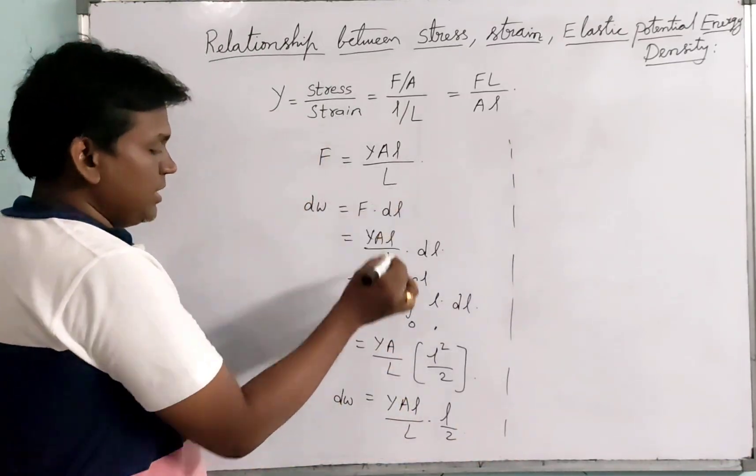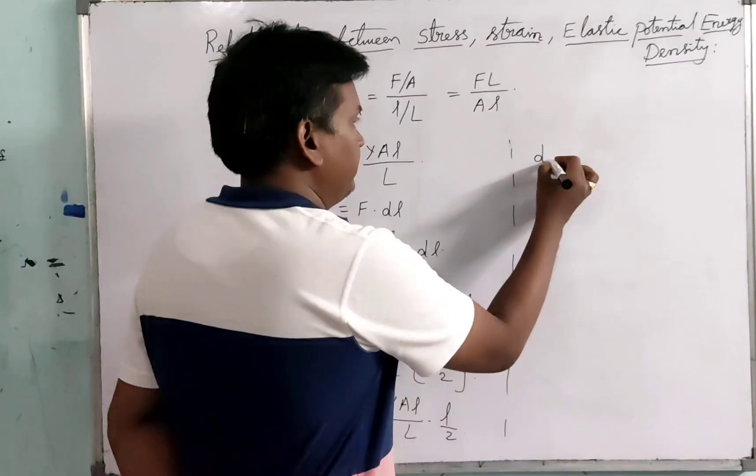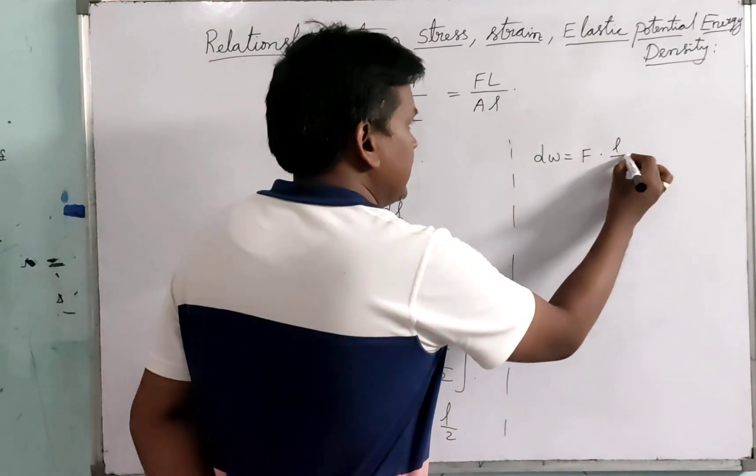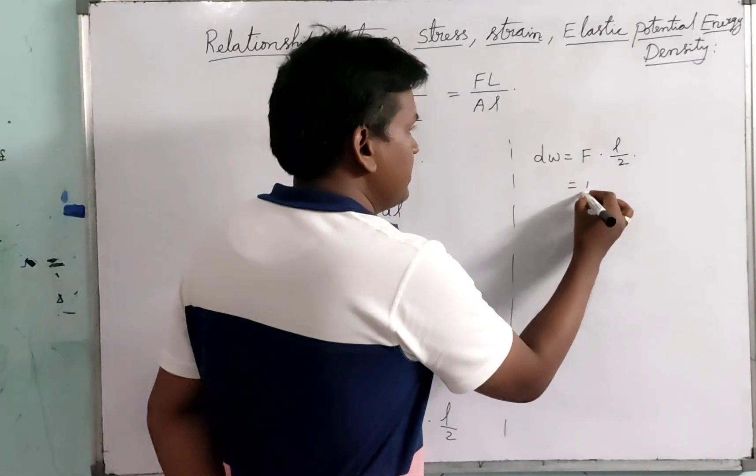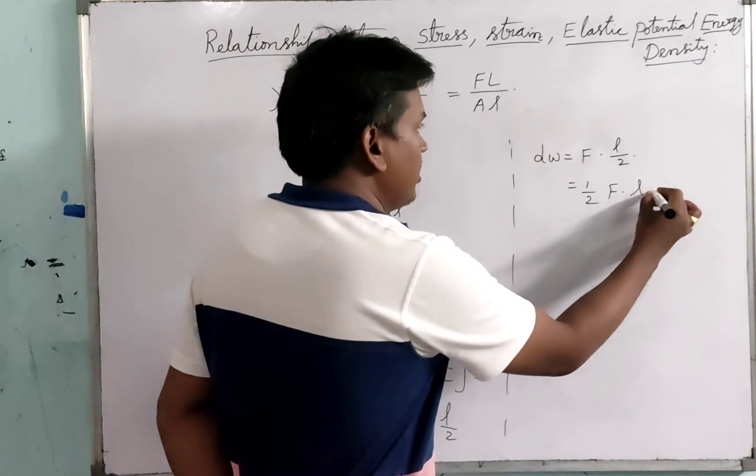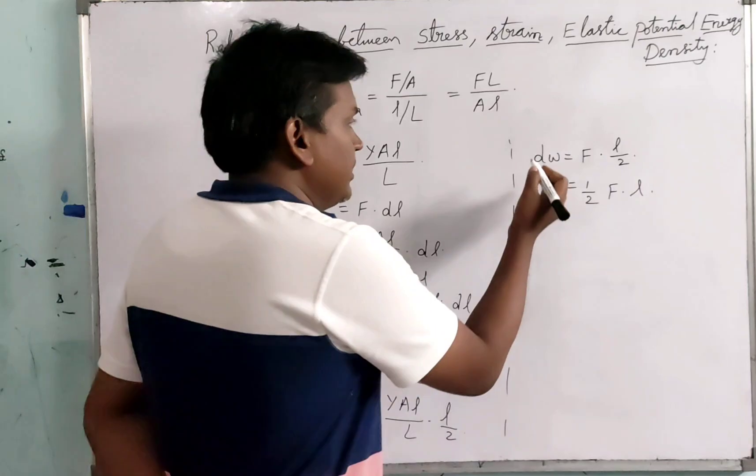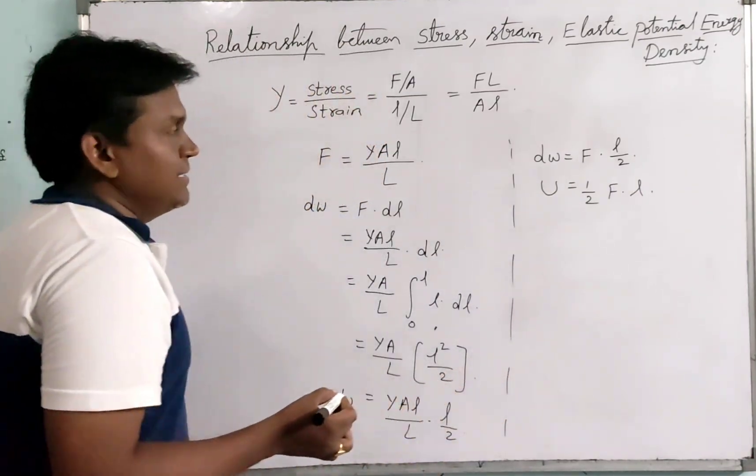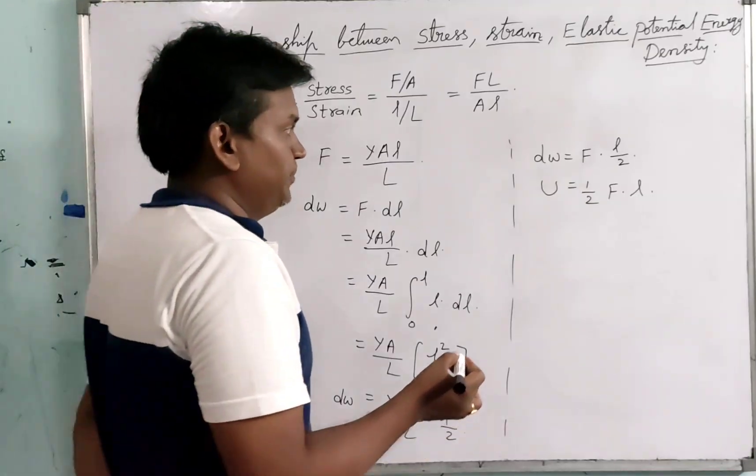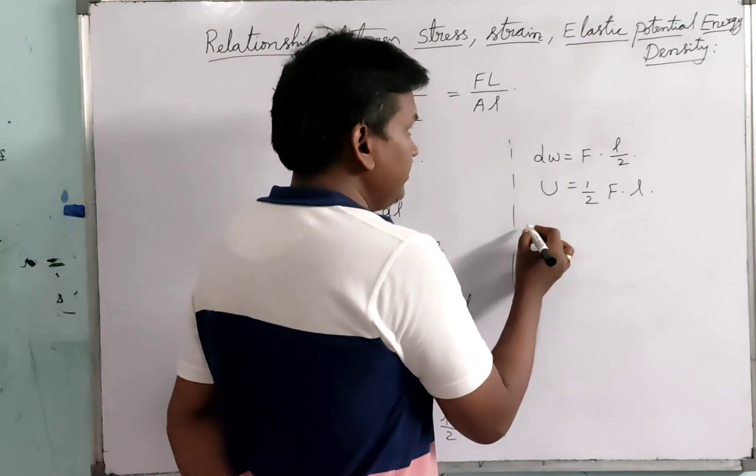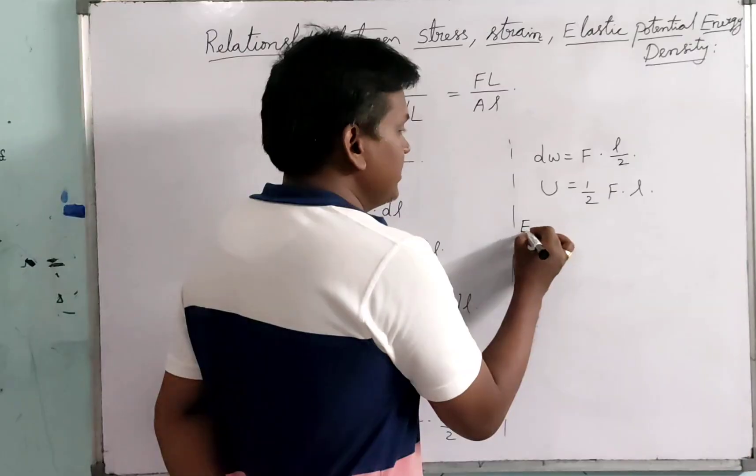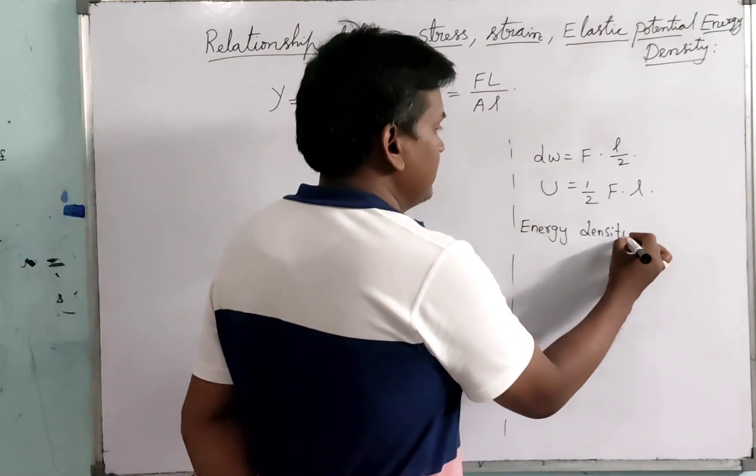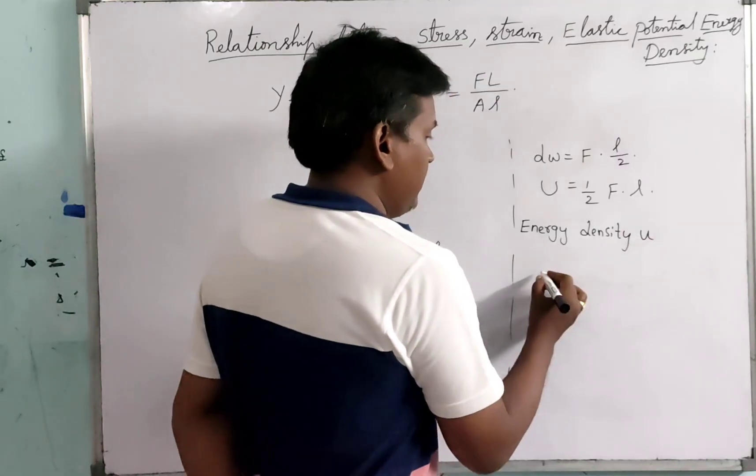Here Y AL upon L is nothing but F. So DW equals F into L by 2, or this can be written as half F dot L. F dot L, or the work done, is nothing but elastic potential energy U. This is capital U, and energy density is small u.